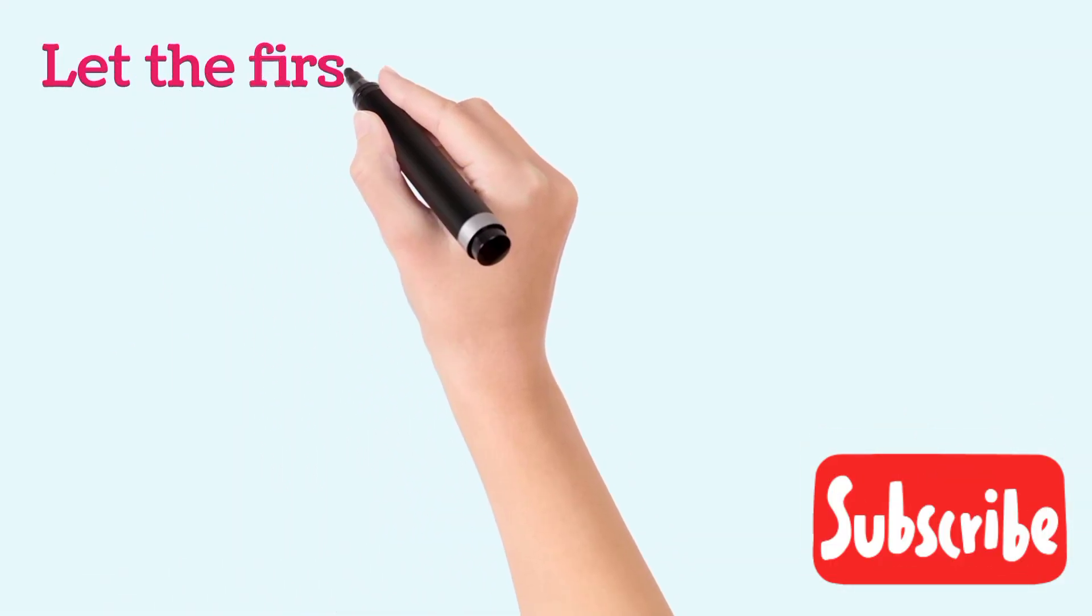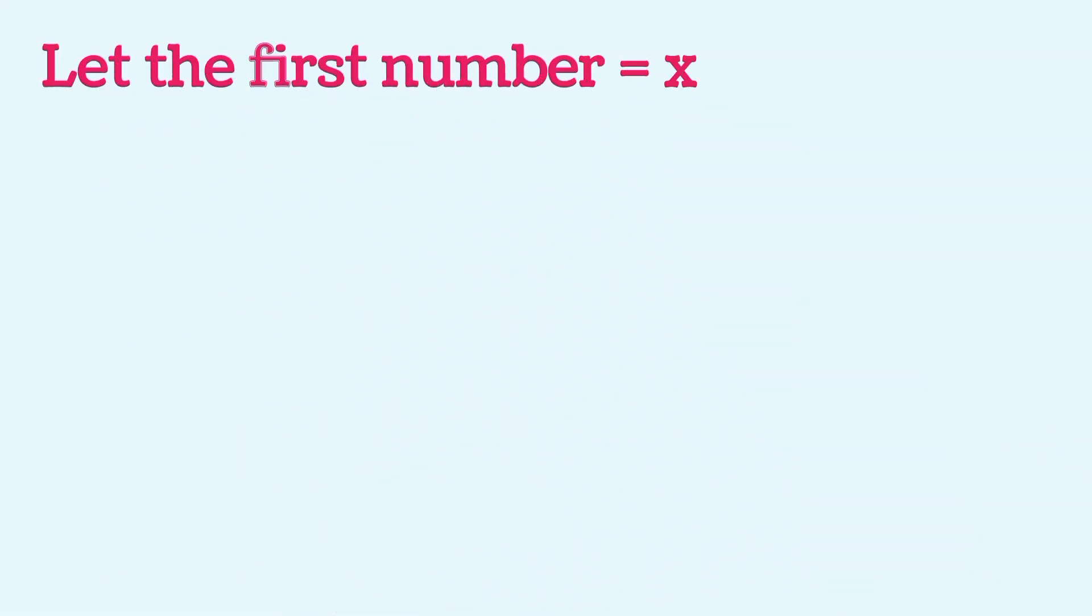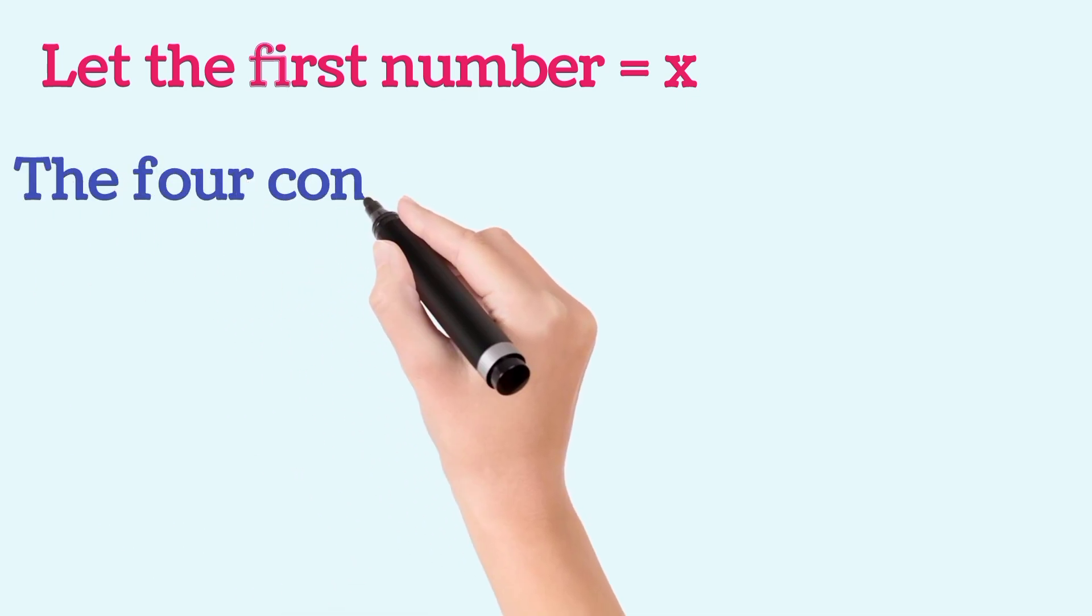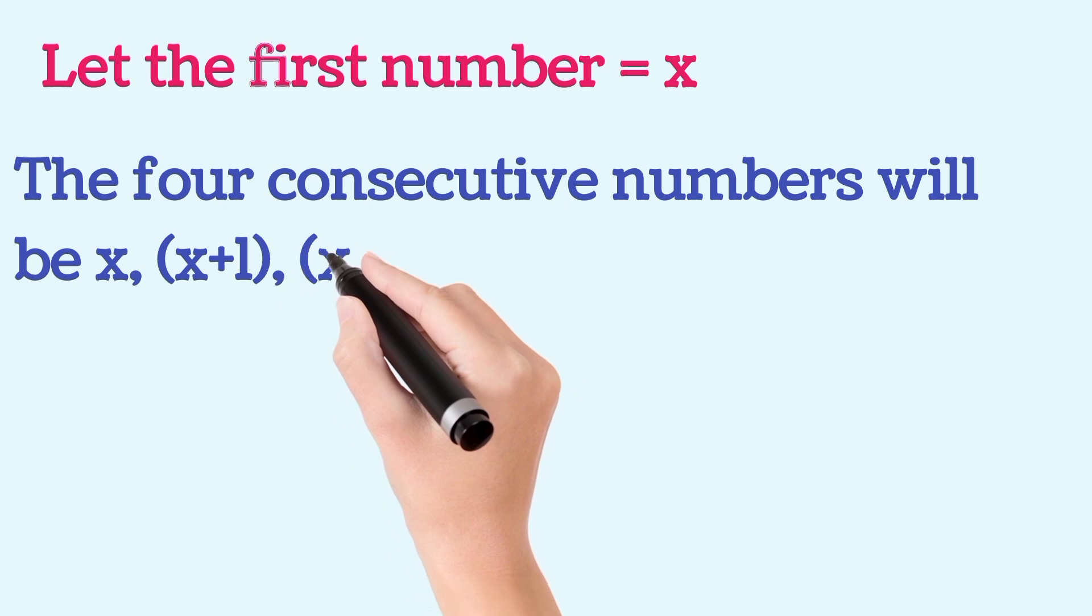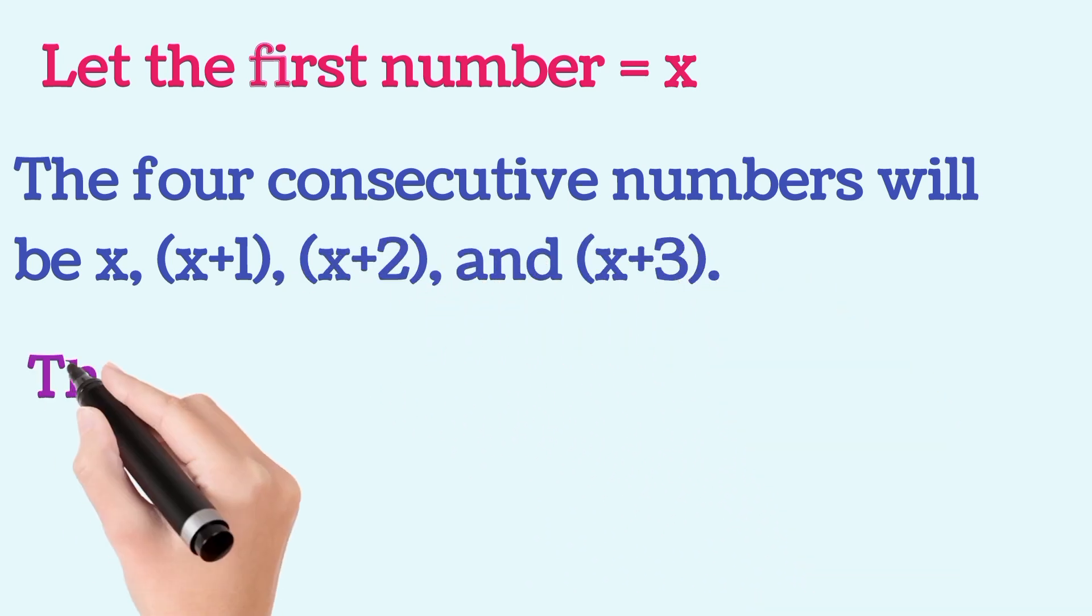So, let us assume that the first number is x. The 4 consecutive numbers will be then x, x plus 1, x plus 2 and x plus 3.